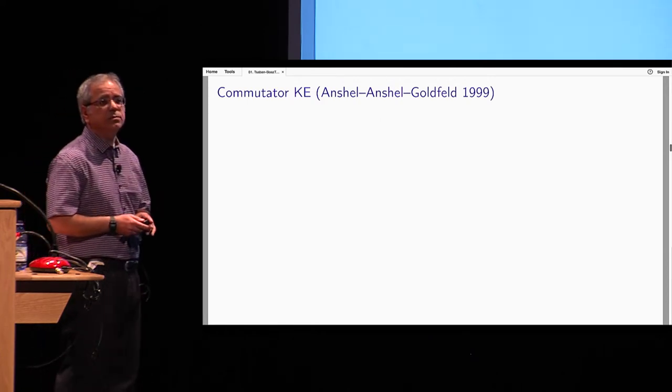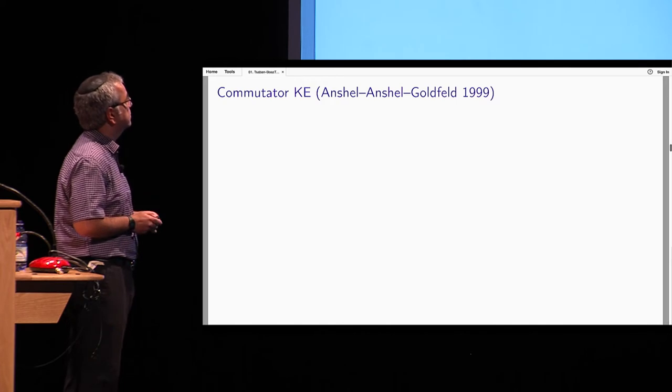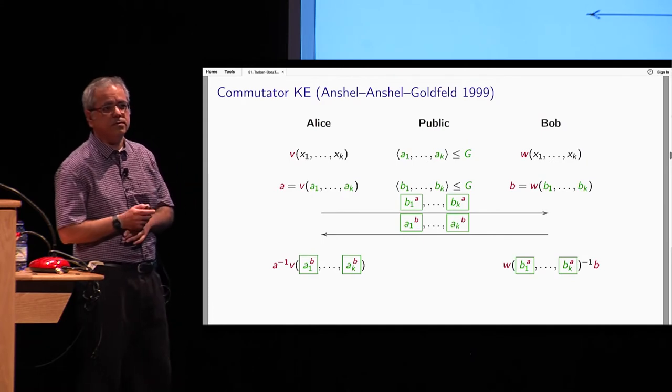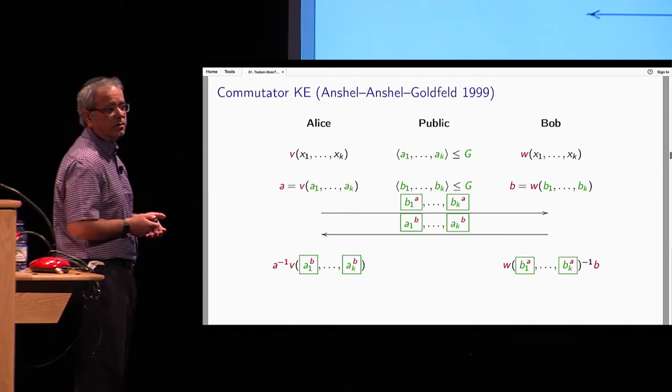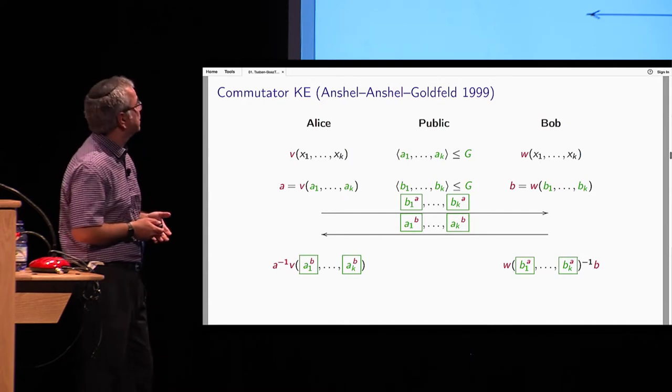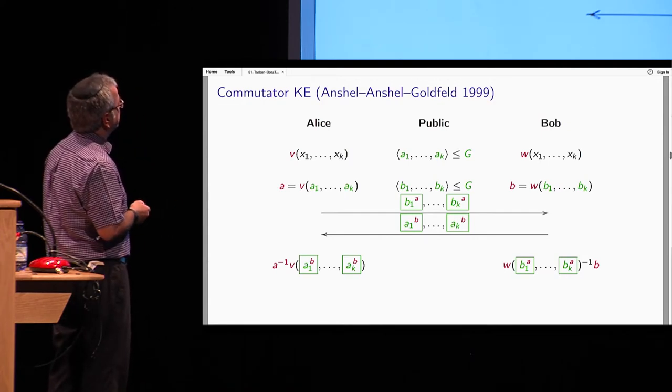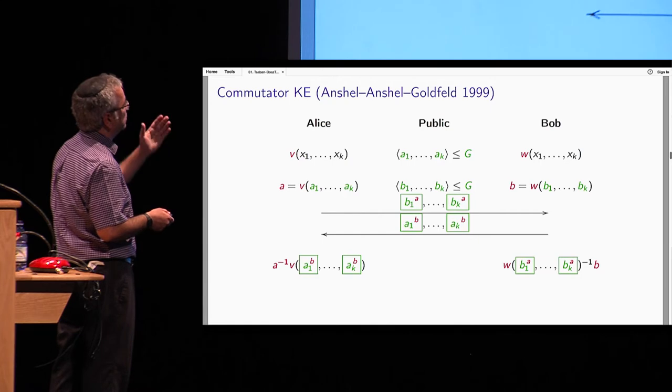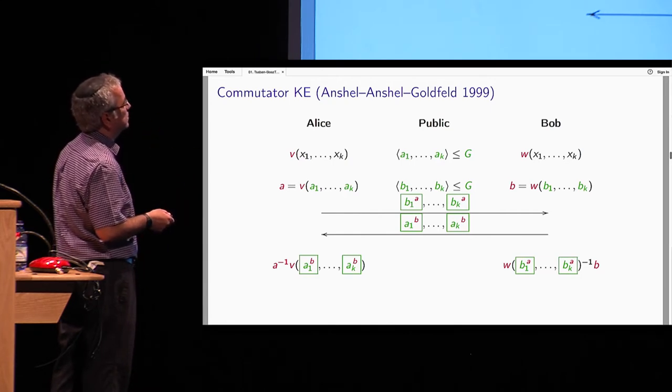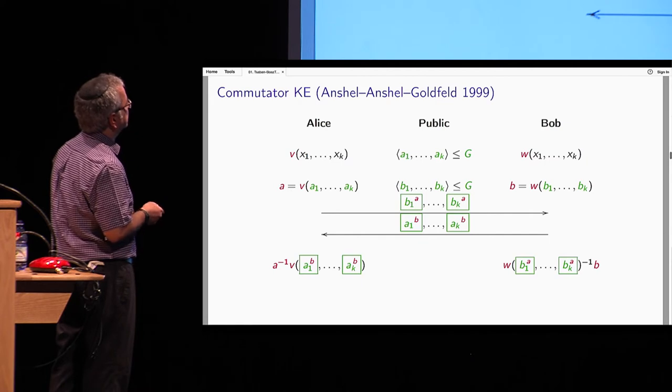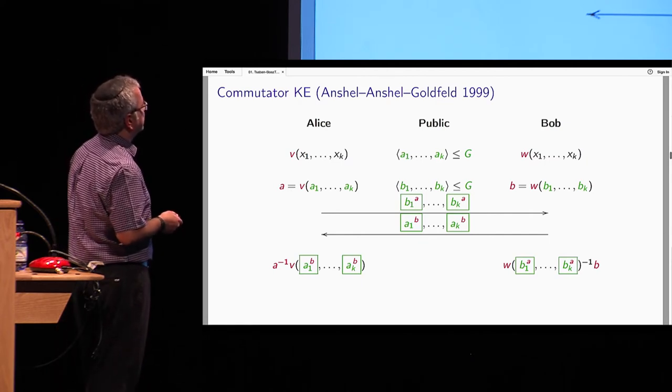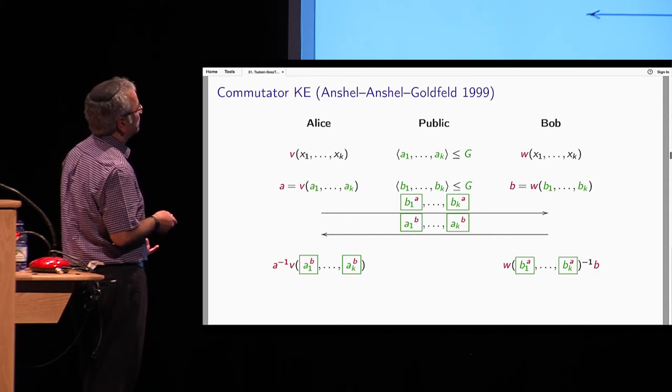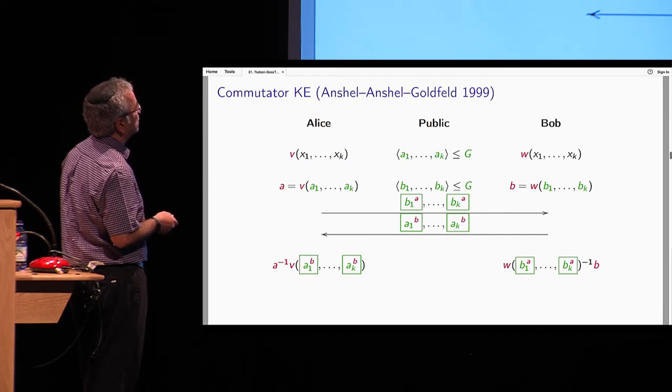Now I will introduce you a key exchange that was introduced long ago. And it's very interesting because it's completely different than the earlier ideas of key exchanges. It uses the fact that the group is non-abelian in a very nice way. So Alice, we have Alice and Bob. Each of them picks a word in the variables x1 to xk, like x1, x5 inverse, et cetera, some random word, secret. Red always means secret. Green means public, known.